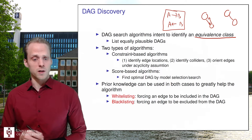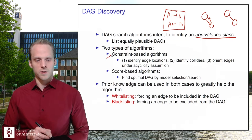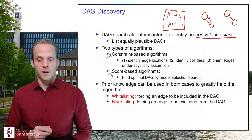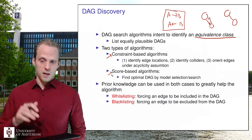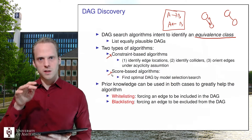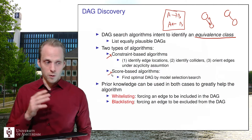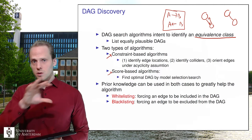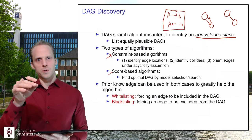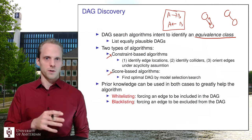There are two main types of algorithms. You have constraint-based algorithms and you have score-based algorithms. The main difference is that constraint-based algorithms look at the node-to-node level — they look closely at the DAG and examine every individual relationship and try to orient them. Score-based algorithms, by contrast, look at the entire picture all together; they don't zoom in on particular parts but rather assess whether the entire model fits well.